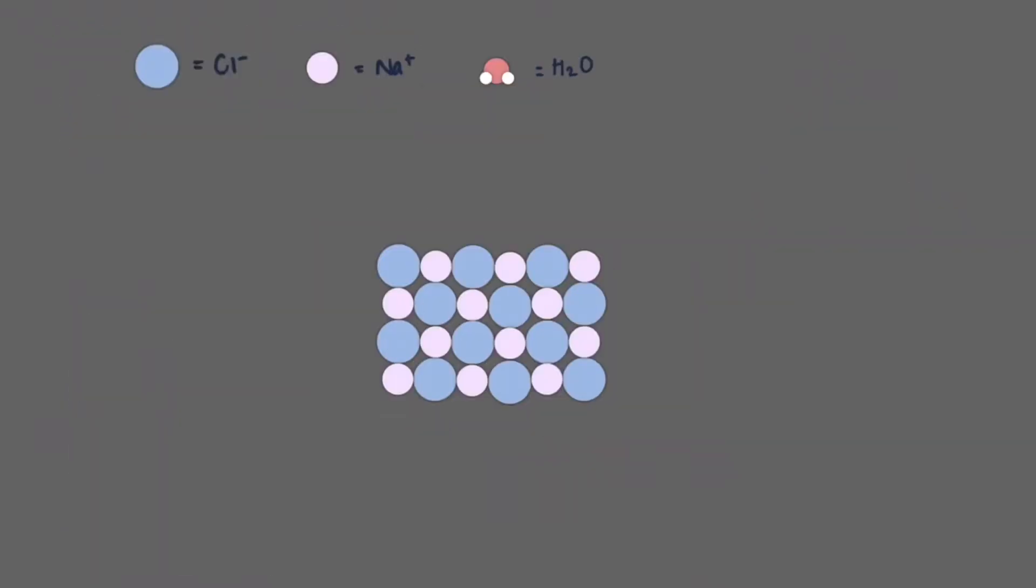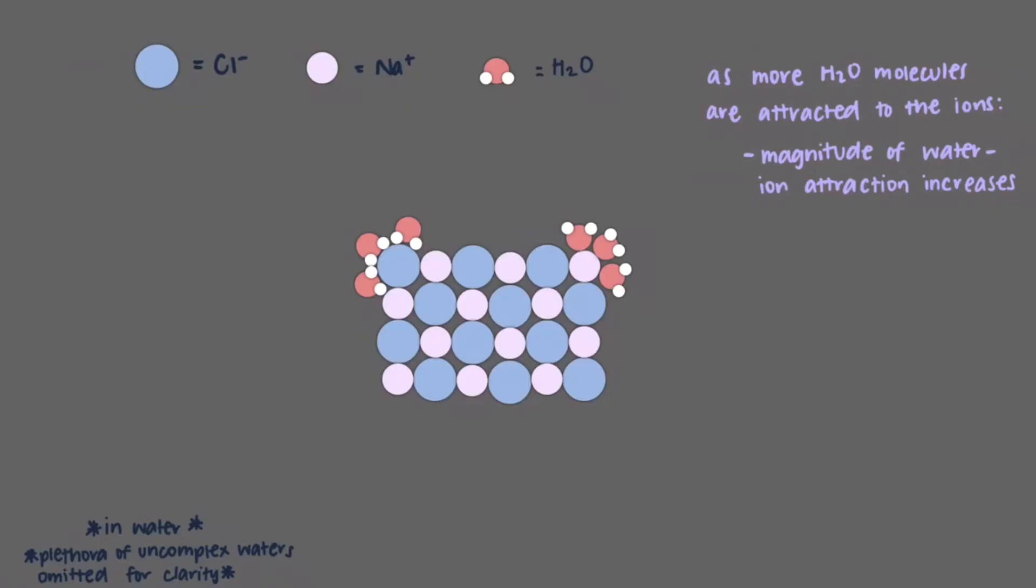Let's now discuss exactly how this property of water comes into play to dissolve ionic compounds. When we place solid sodium chloride in water, the arranged network that it exists in will remain until water breaks it up. Hydrogen will be attracted to chloride and oxygen will be attracted to sodium. As more water molecules are attracted to either the sodium or chloride ions, depending on the water molecule's orientation, the magnitude of water ion attraction increases and the strength of ion ion attraction is reduced.